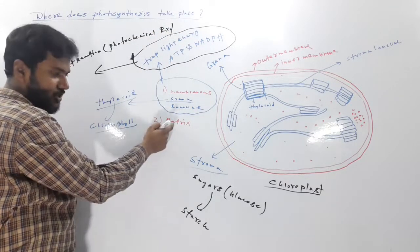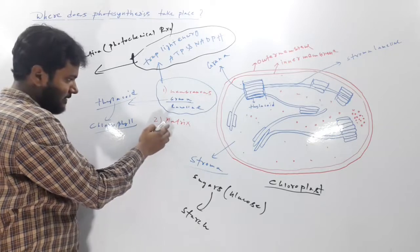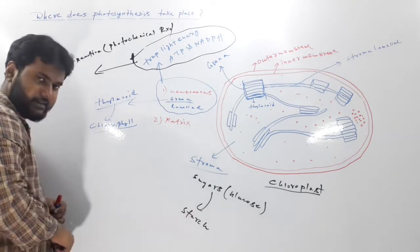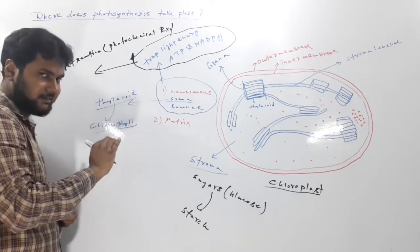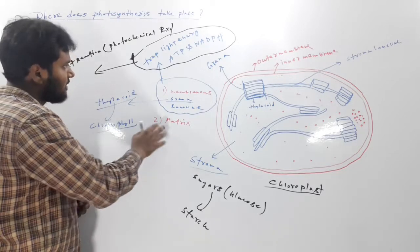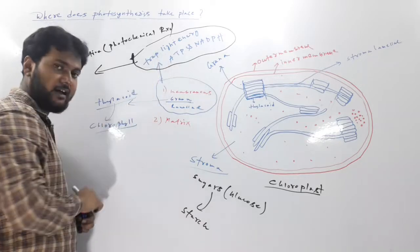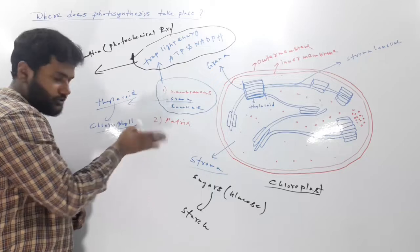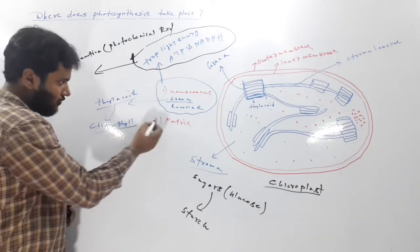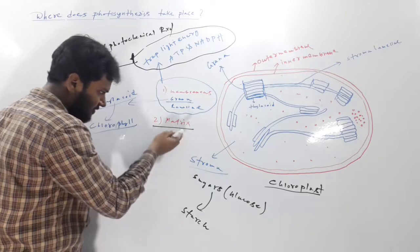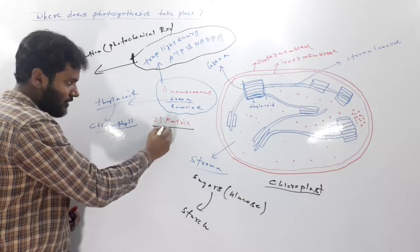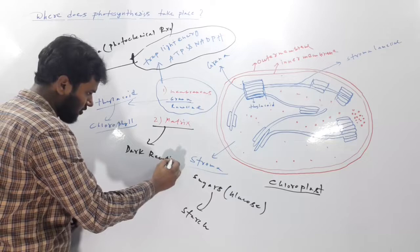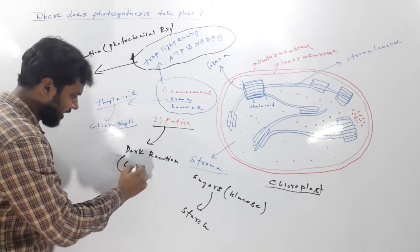But the latter which is occurring in this matrix, the enzymatic reactions which will form sugars and then starch, these are not directly light-driven process. But these are dependent on the products of the light reaction - the ATP and NADPH2. So to separate and distinguish these two different phases, we conventionally call these reactions which occur in this matrix dark reaction, or it is also called carbon reactions.